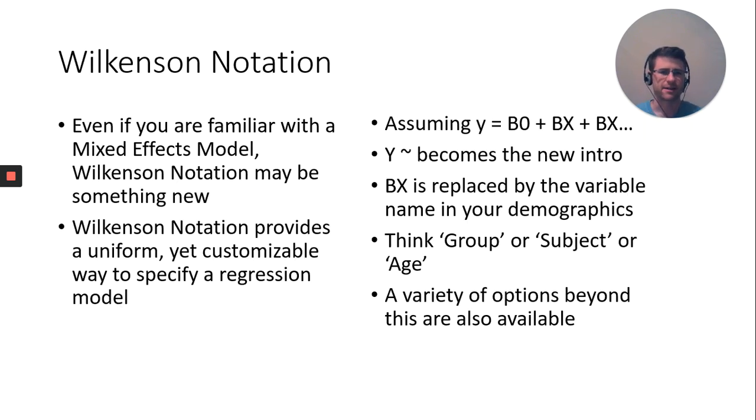For Wilkinson notation, it's a little strange, but even if you're familiar with the mixed effects model, this might be new. The goal was to provide a uniform but customizable way to specify this model. Assuming our model looks like y equals your intercept beta naught plus beta x plus beta x and keeps going, the new intro becomes beta tilde. Beta x is replaced with the variable in your demographics table. Think group, subject, age.